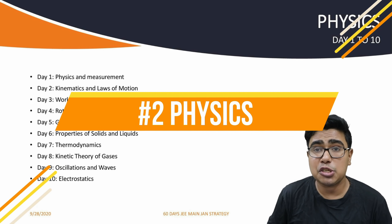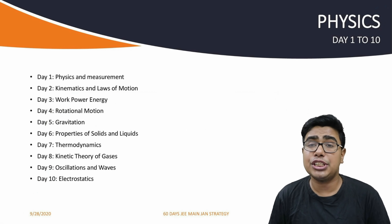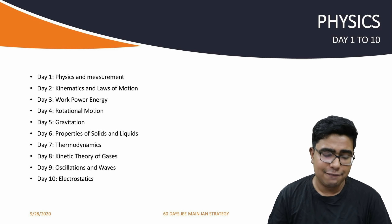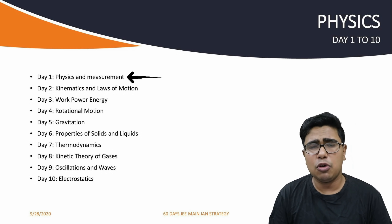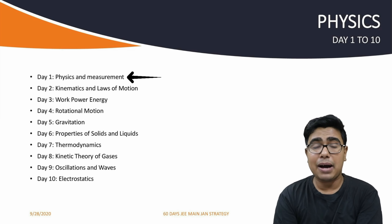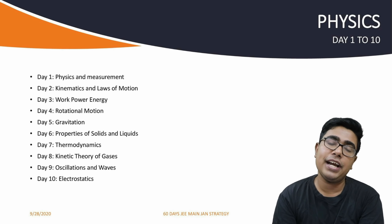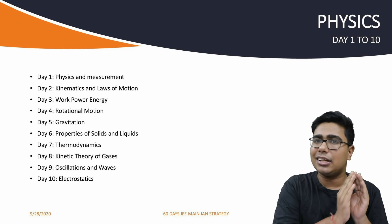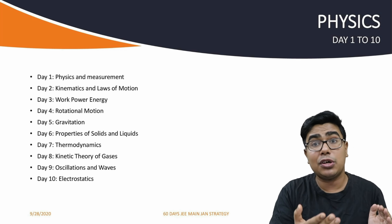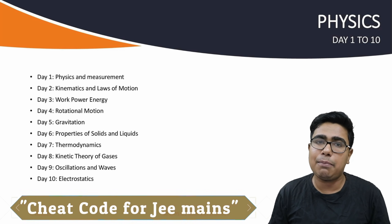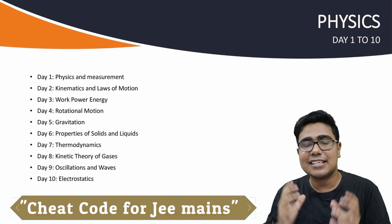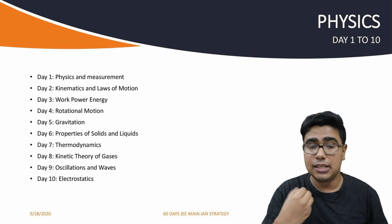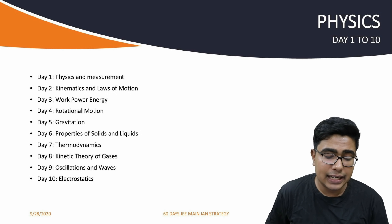Now let's talk about Physics — 10 days. Day 1: Physics and Measurement. People underestimate Measurement, but from this chapter you can get 4 numbers with many cheat codes. The rest of the 96 marks depend on the other chapters. So do Physics and Measurement on Day 1.